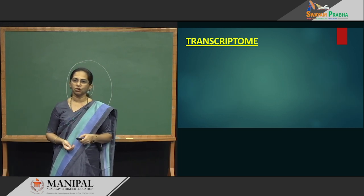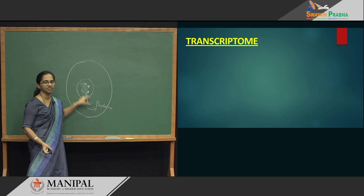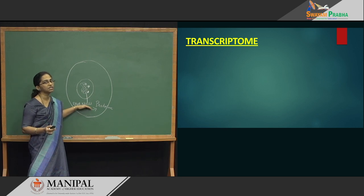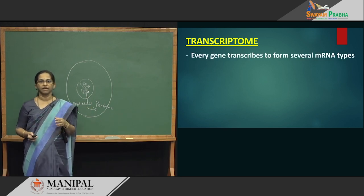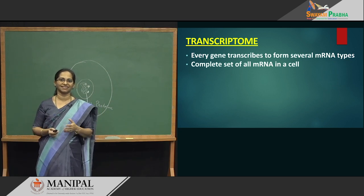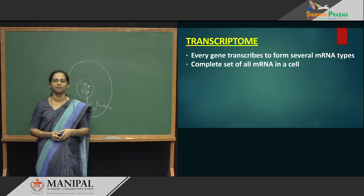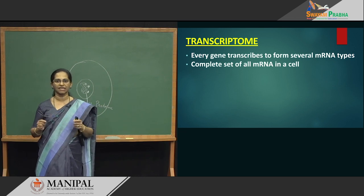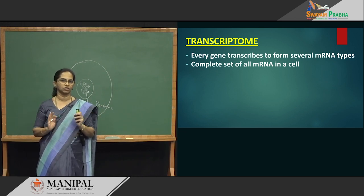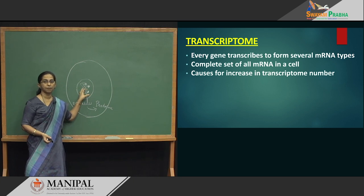Transcriptome — what is transcriptome? We do not get the DNA material out every now and then; it always remains safe in the locker. We get only the RNA copies. Transcriptome is: every gene transcribes to form mRNA, and all the mRNAs inside a cell is called the transcriptome. We have many many transcriptomes coming out when there is a demand for protein synthesis. If you have 20 to 25,000 genes, the number might double or even be 3 times more for the transcriptome.